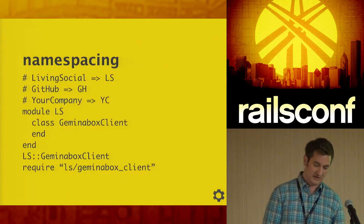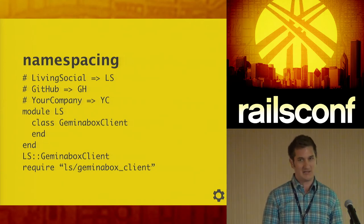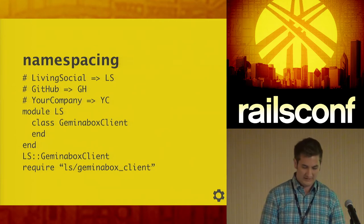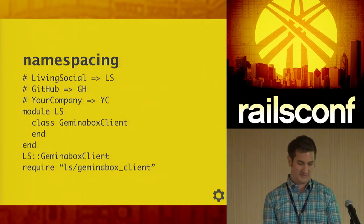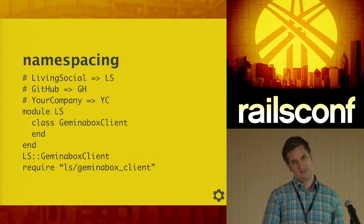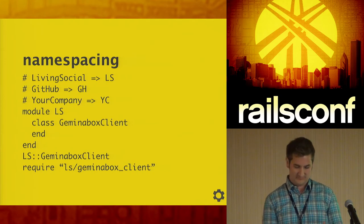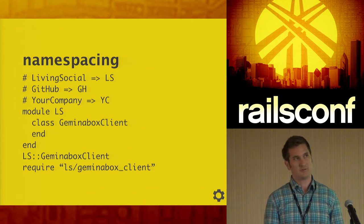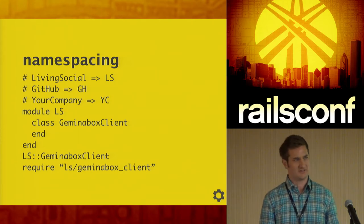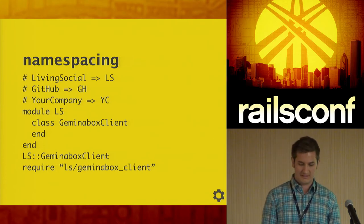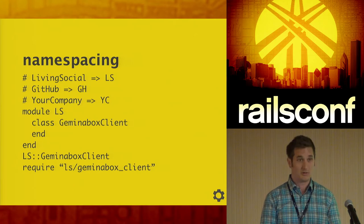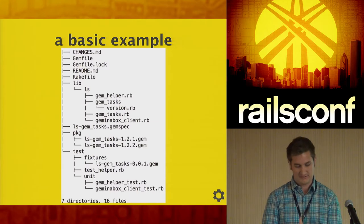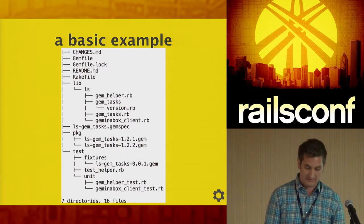A namespacing example: we use `LS` for LivingSocial — `LS::GemInABoxClient`. This is really helpful; we have early gems that didn't do this, and it was unclear whether they were open source or internal. A basic gem example includes a CHANGES file to track version changes, program code, and tests — everything nicely compacted for the project. A quick review on semantic versioning: the patch number increments for bug fixes without breaking the public API.